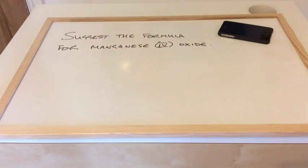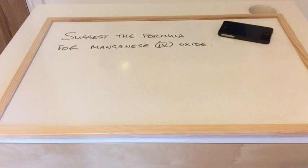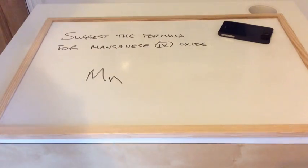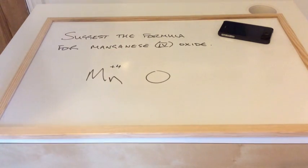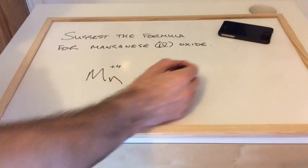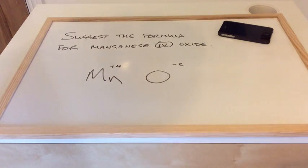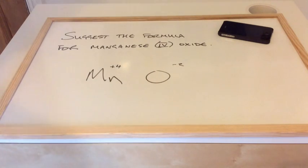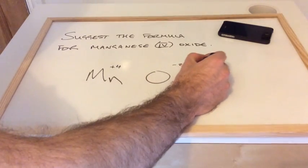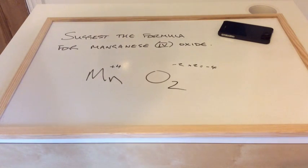Finally, some exam examples where you're given the name and must suggest the formula. For manganese(IV) oxide: the Roman numeral IV tells us manganese is in the plus 4 oxidation state, and oxygen has a minus 2 oxidation number. One of each won't be neutral — plus 4 and minus 2 don't cancel. So we need two oxygens: 2 times minus 2 gives minus 4, which balances the plus 4. The formula is MnO2.